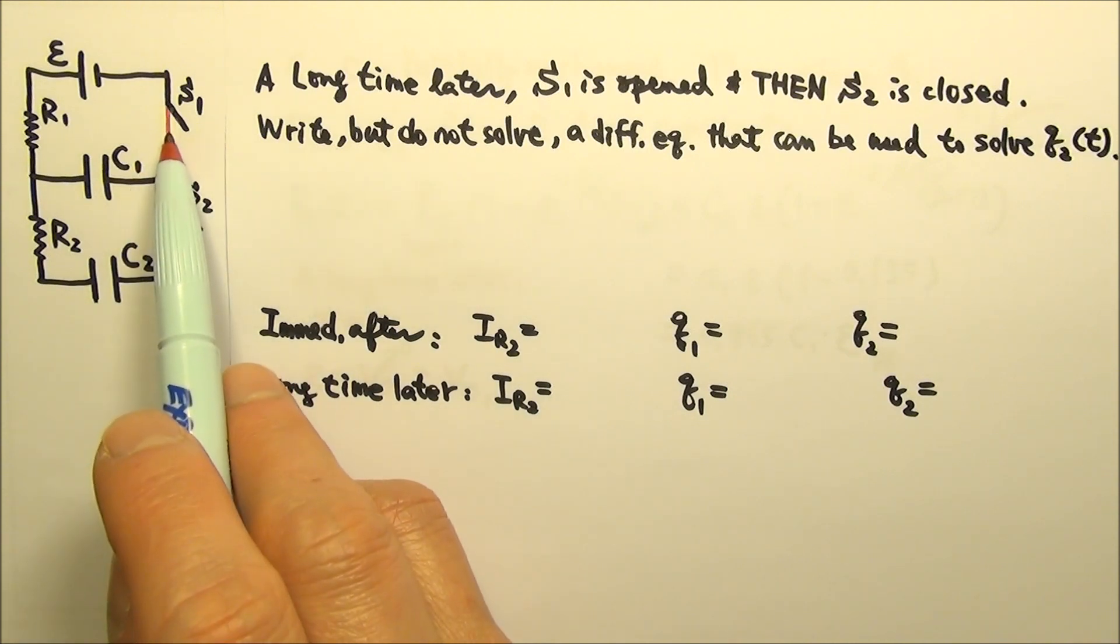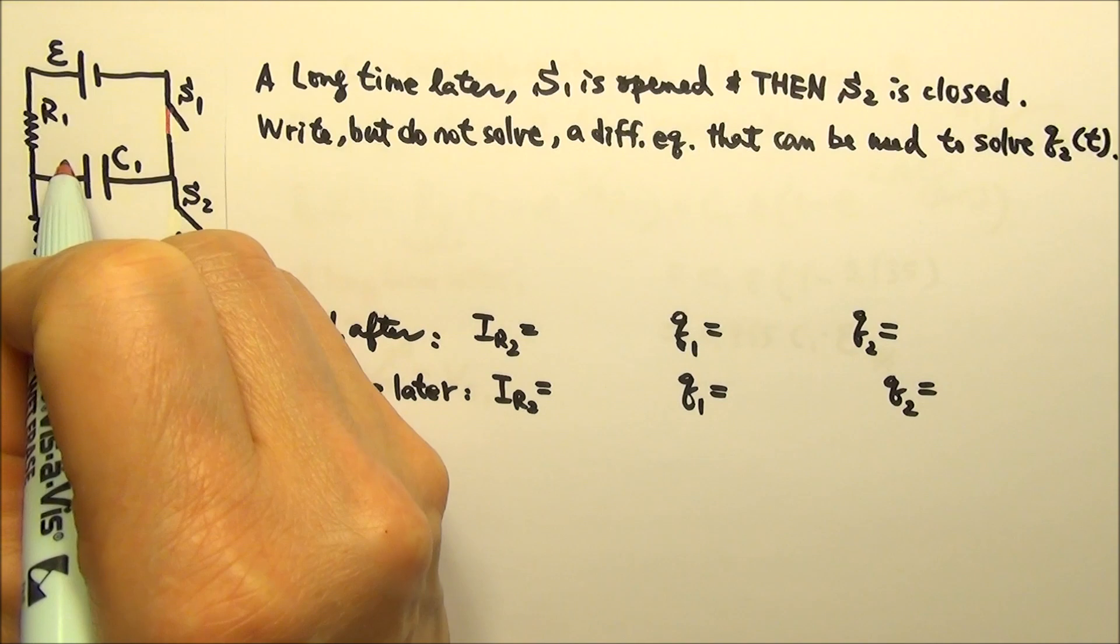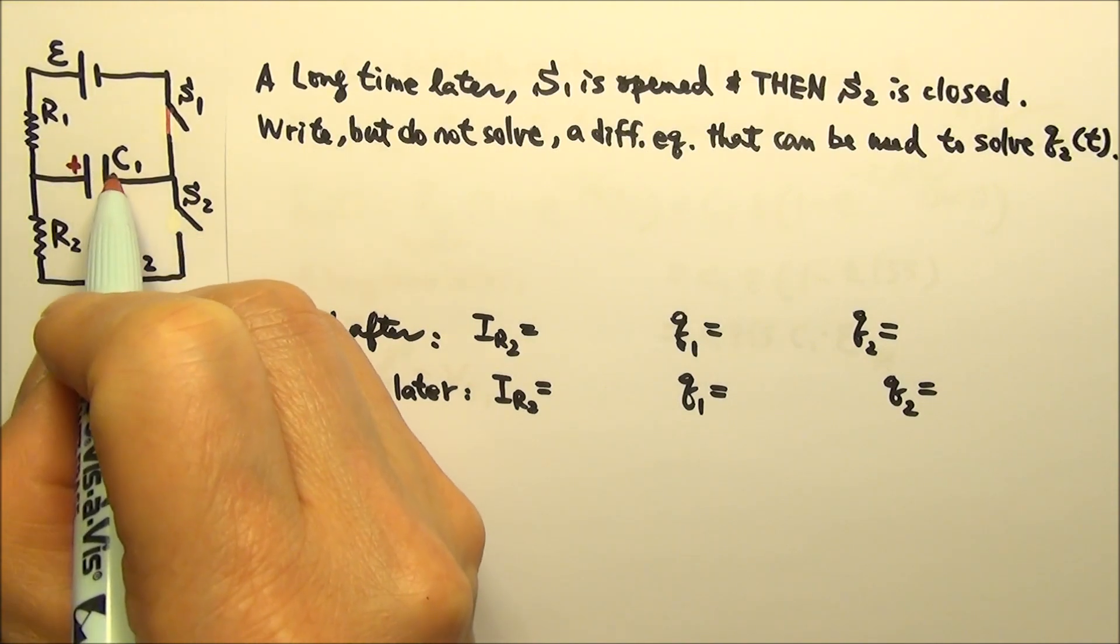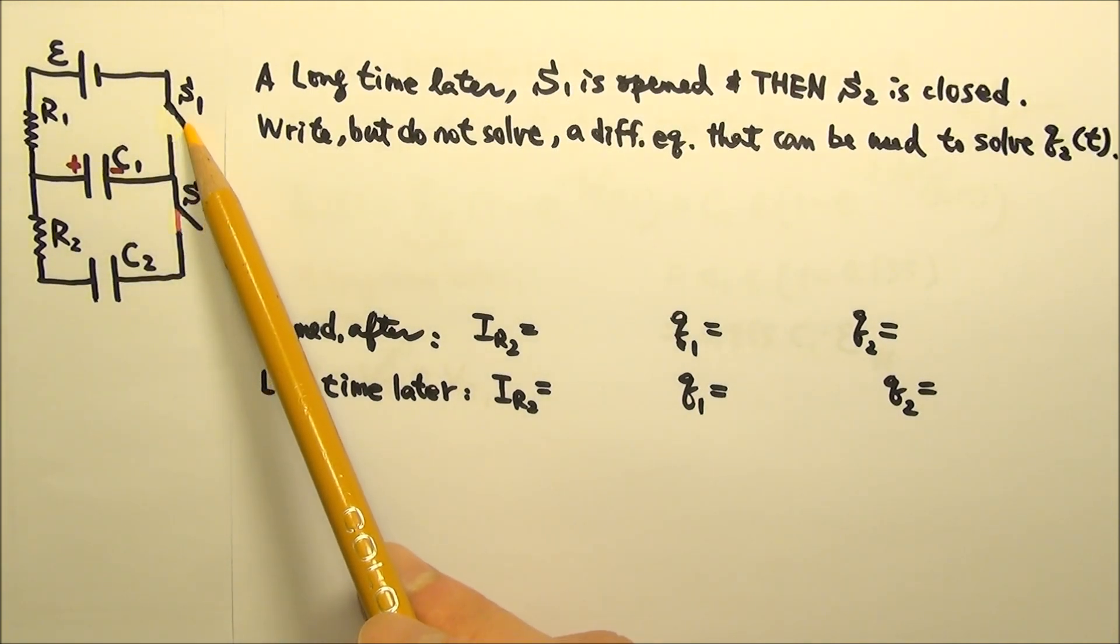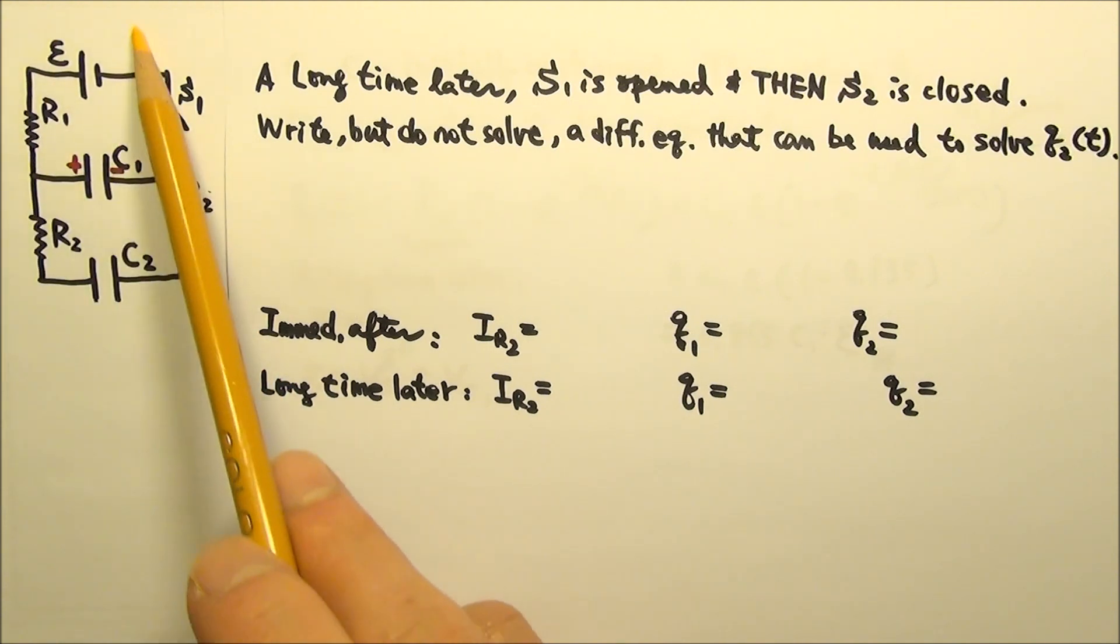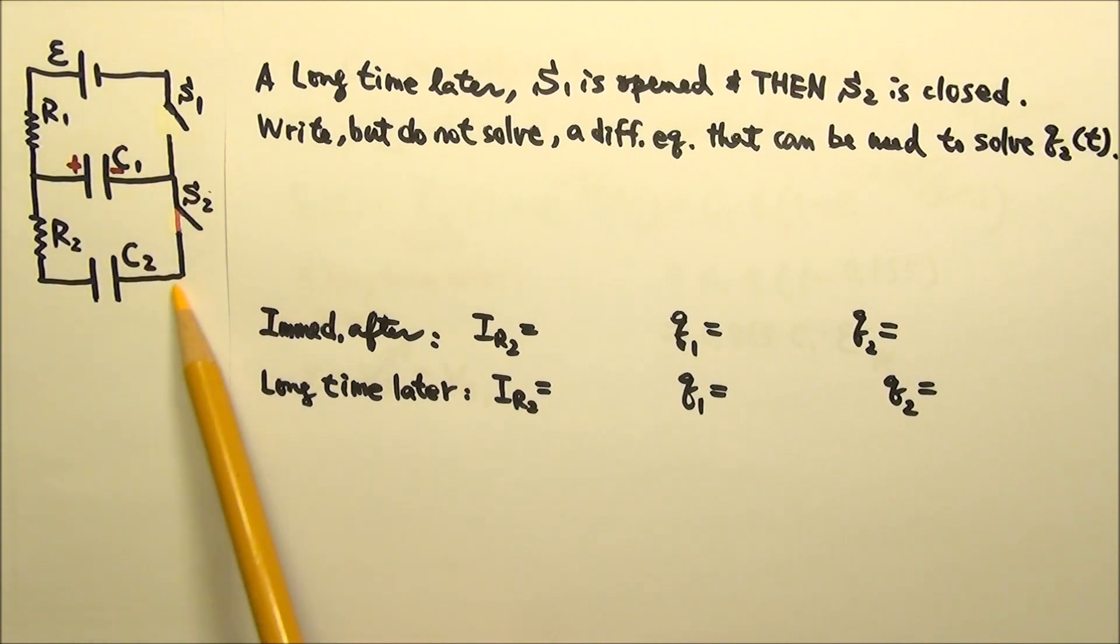Back when S1 was closed, the battery charged C1's left plate positive and the right plate negative while C2 stayed uncharged. With S1 being open and S2 closed, the top part of the circuit is no longer connected. So the circuit now is just this part.